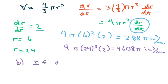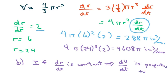And then for the b part, if derivative of r with respect to time is constant, that would mean that derivative of volume with respect to time is proportional to r squared. It's not constant, it's proportional to r squared.